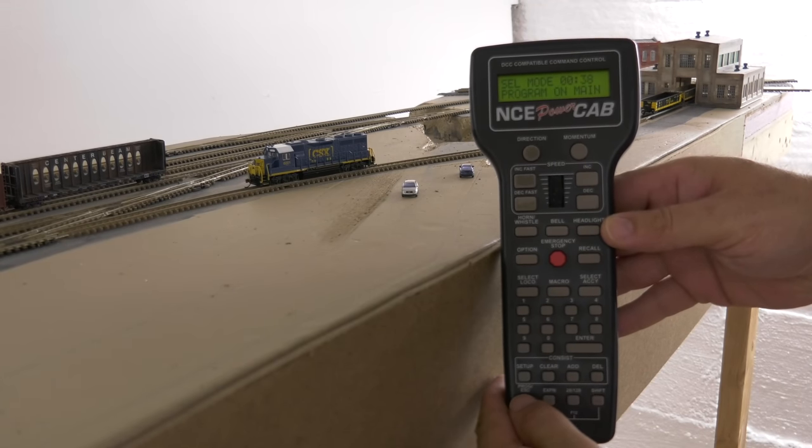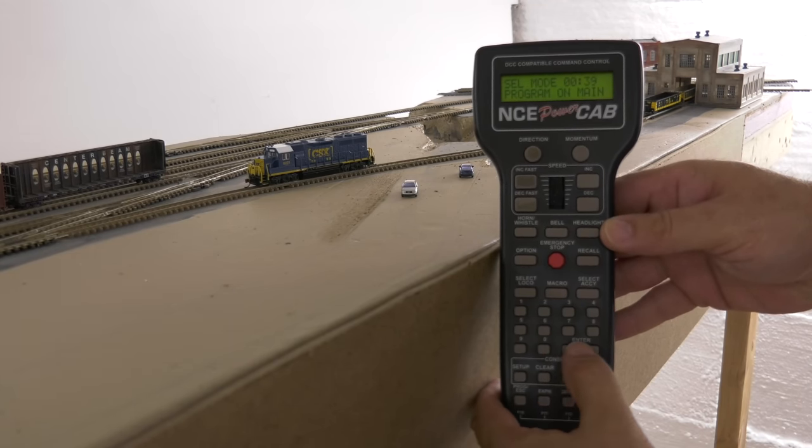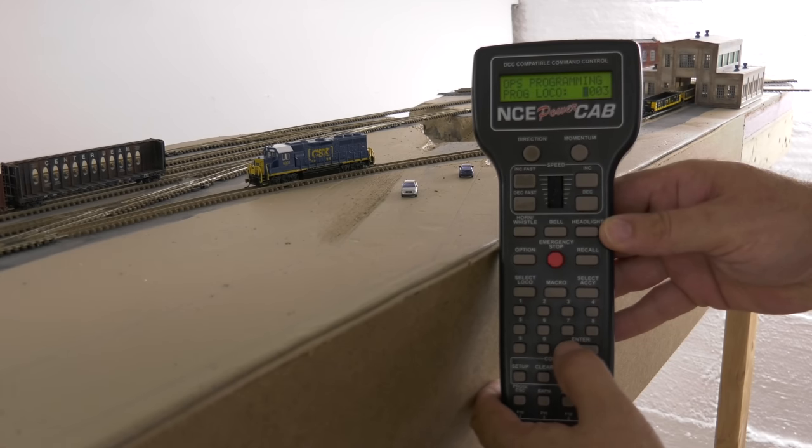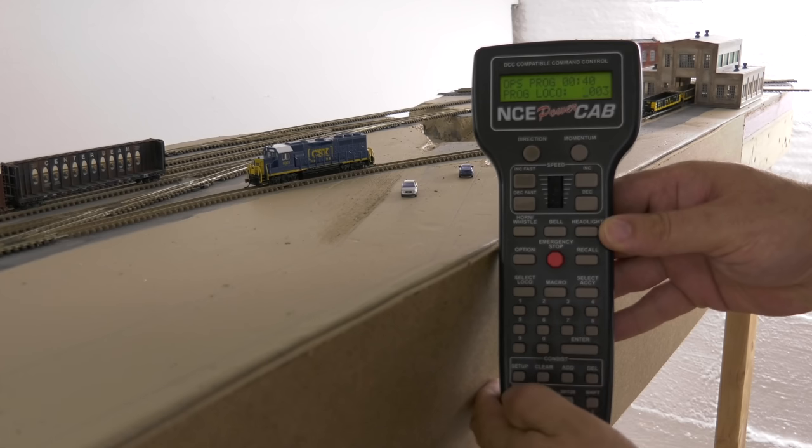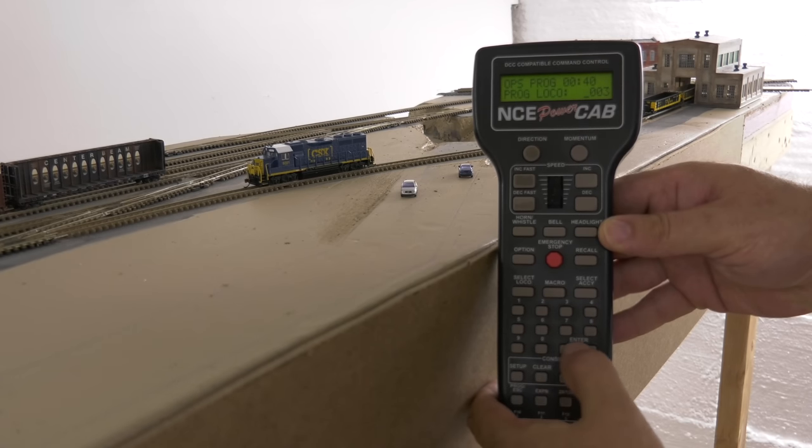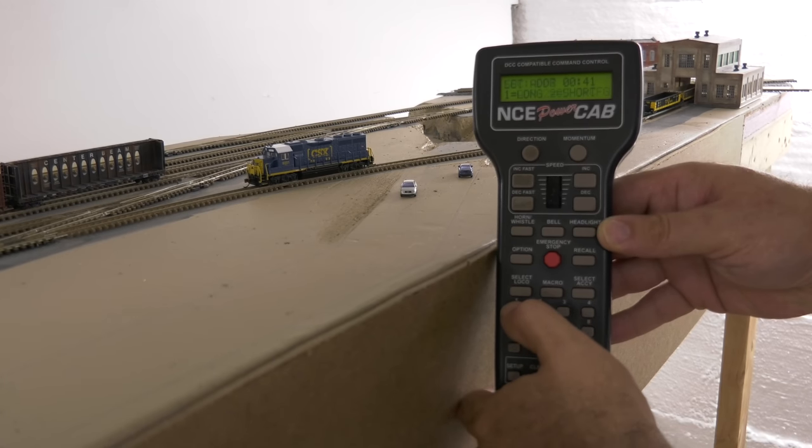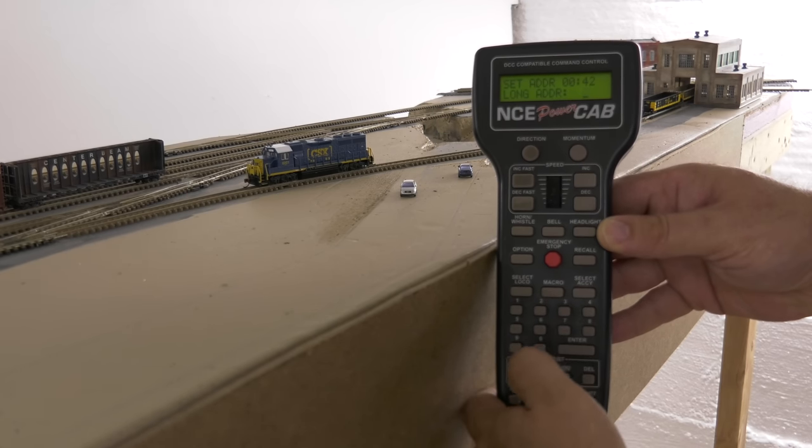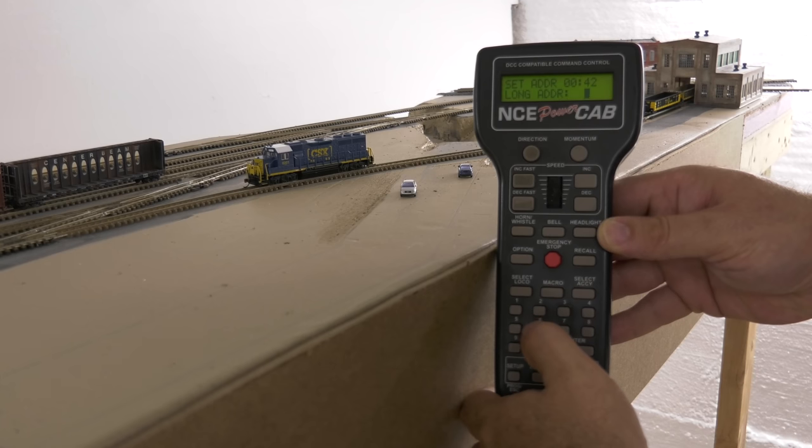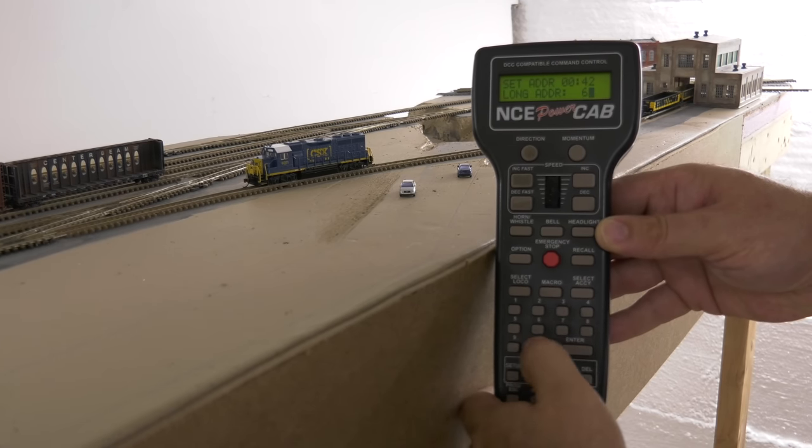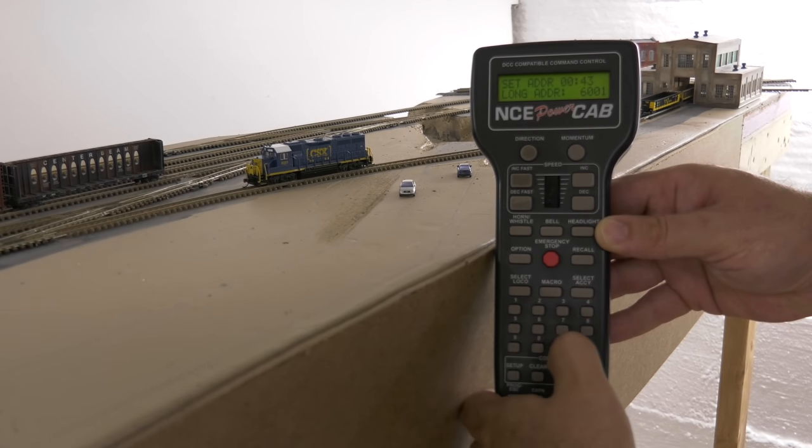Program. Yes, we're going to program on the main. Enter. Enter. Okay, it knows that that's engine number three, it's the only engine on the track, so yes. Number one. This will be the address. We're going to do the long address. Number one. The long address is CSX 6001 Enter.